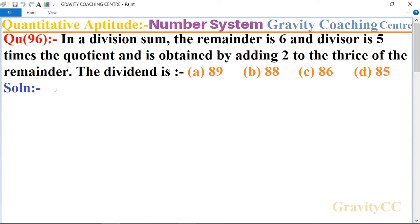In this question, given that the remainder is 6 and divisor is 5 times the quotient. This means D = 5Q, and divisor equals thrice the remainder plus 2, so D = 3R + 2.